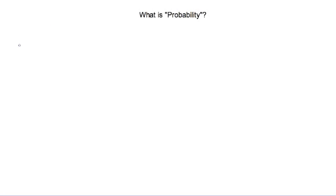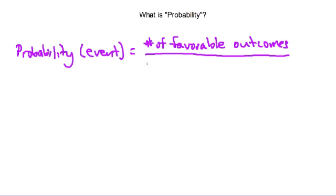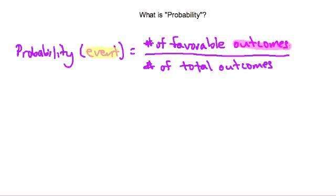At its simplest, probability is a ratio. The probability of an event is equal to the ratio of the number of favorable outcomes compared to the total number of outcomes. This definition gives us two key words we need to understand: what is meant by an event, and what is meant by an outcome — specifically favorable outcomes and total outcomes.